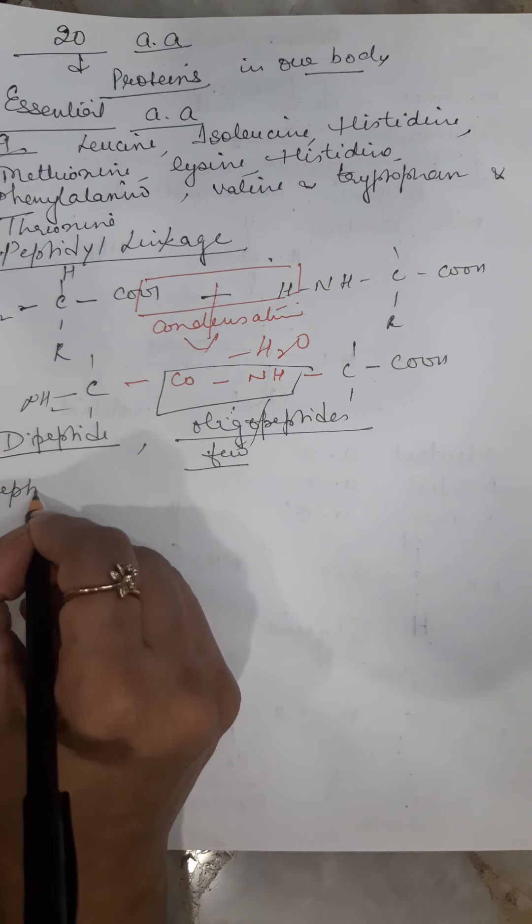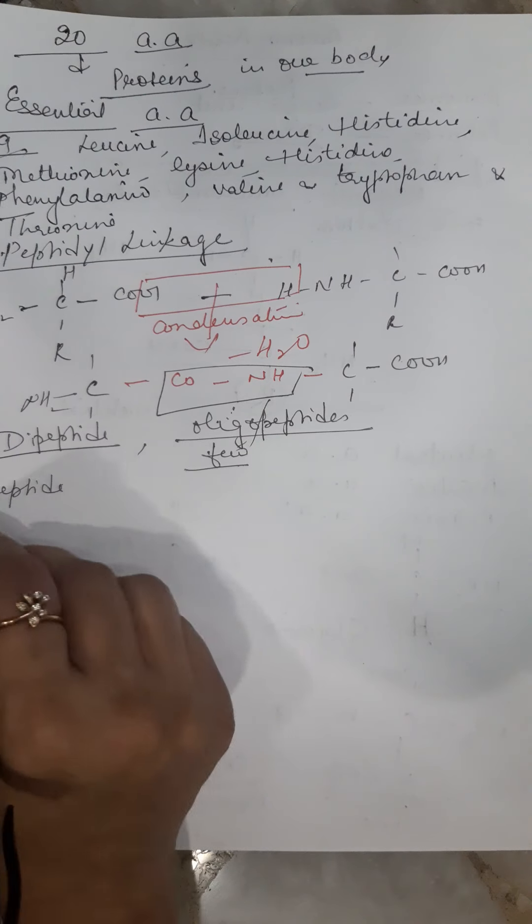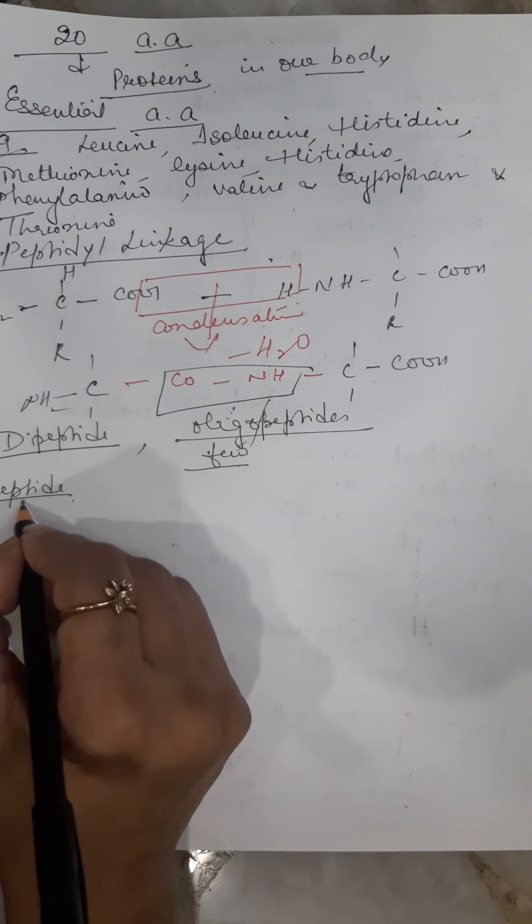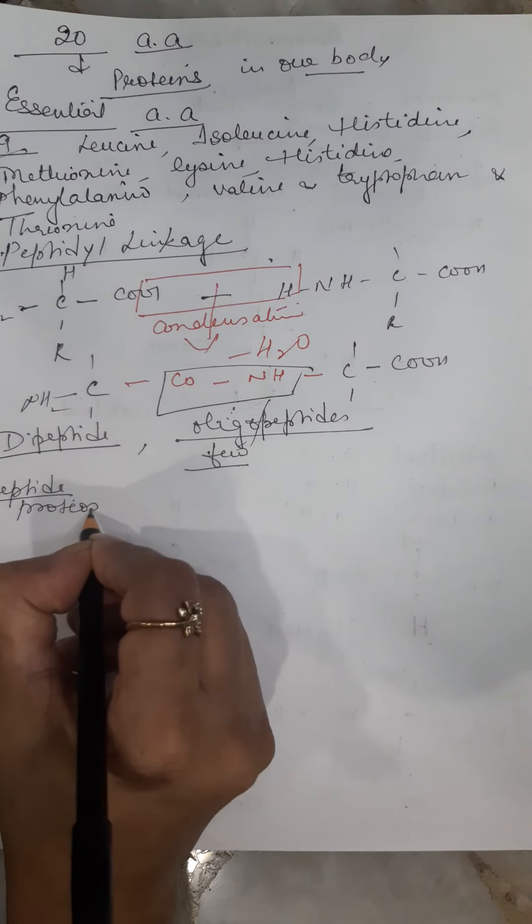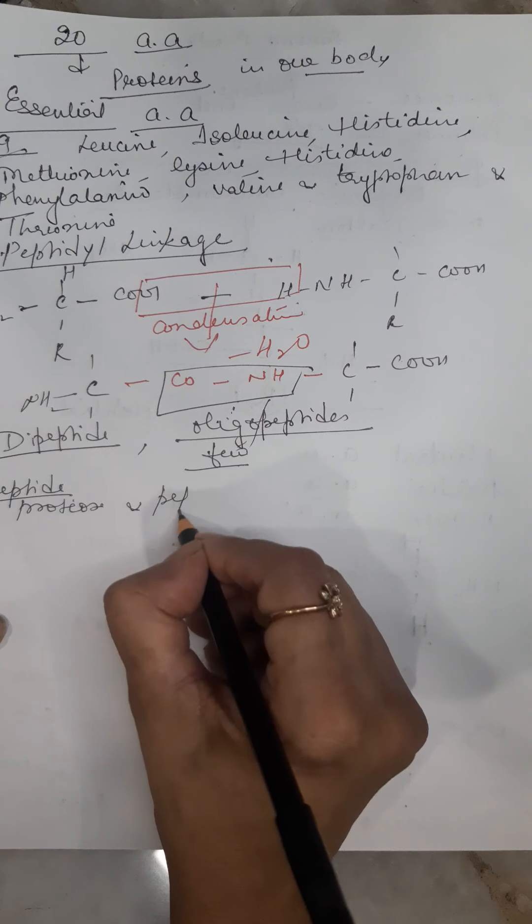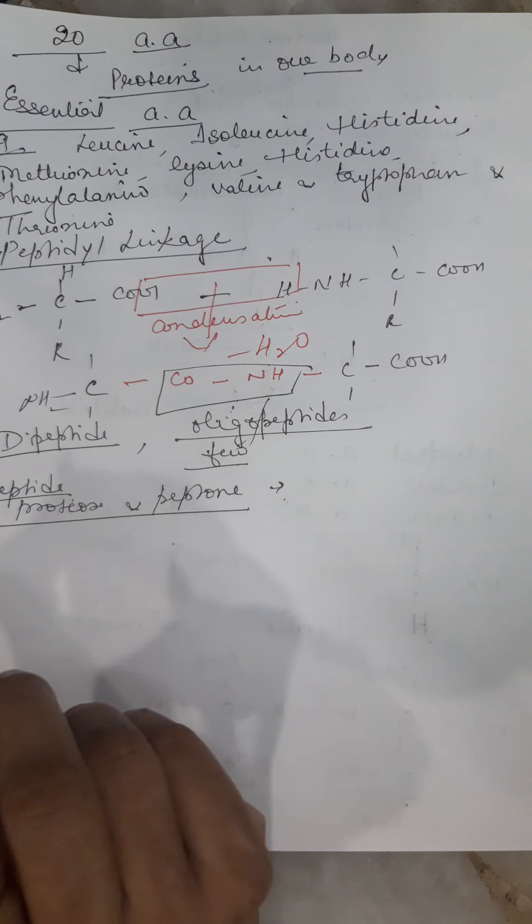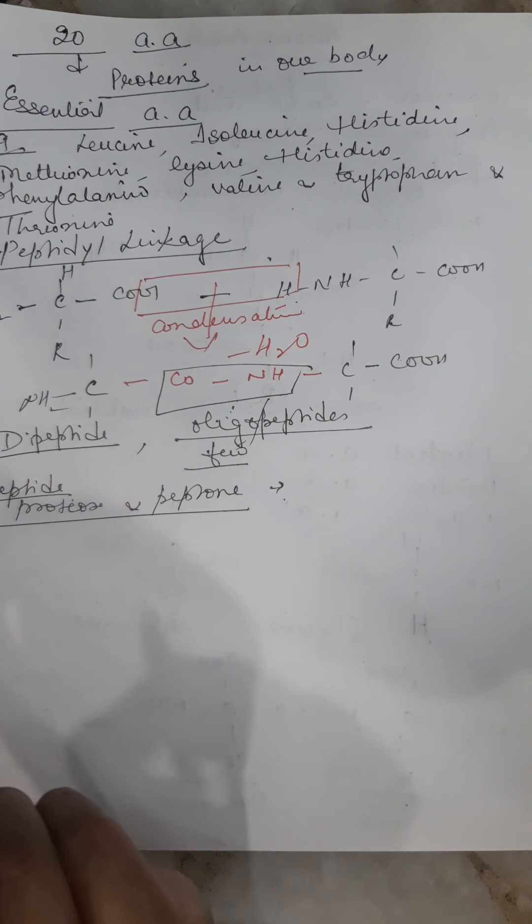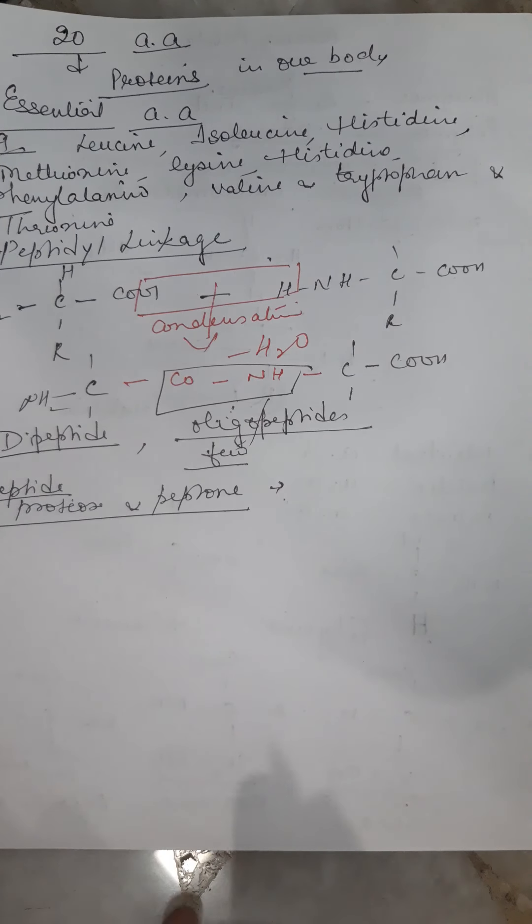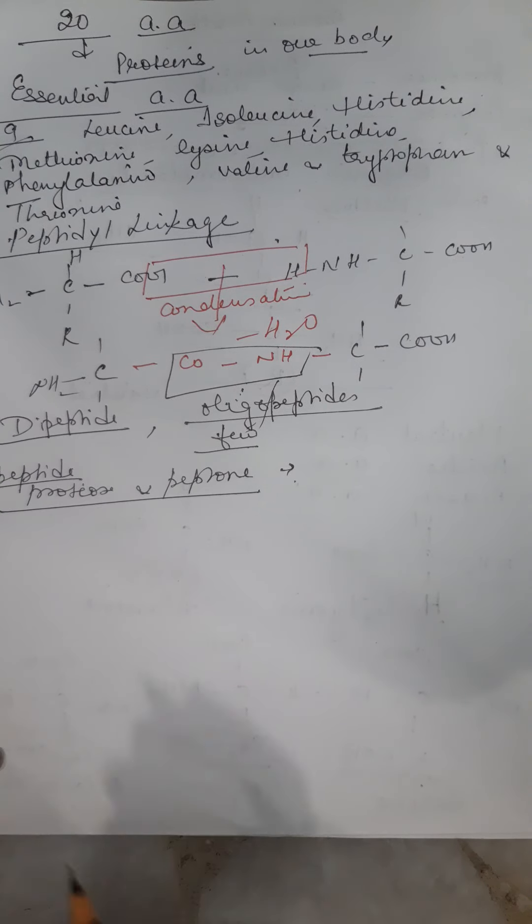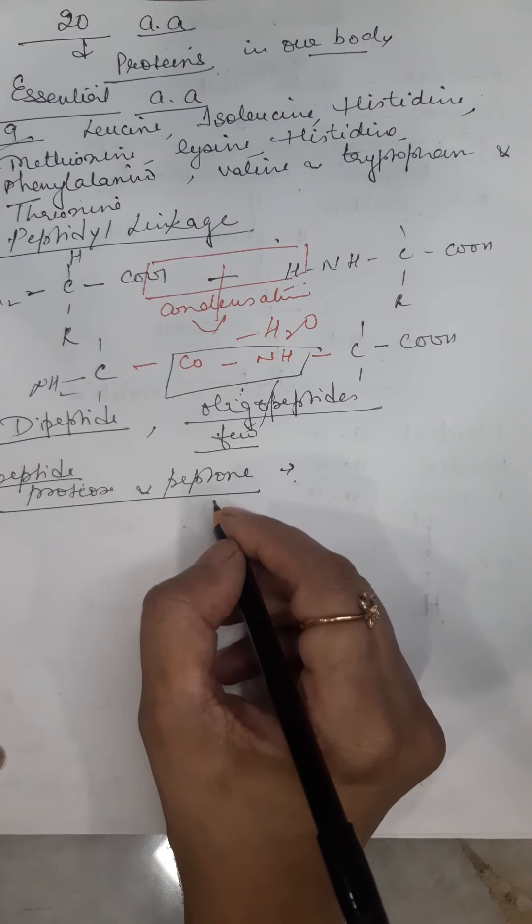There are certain other words also. Proteose and peptones - these are smaller chains which are formed by the hydrolysis or digestion of proteins.